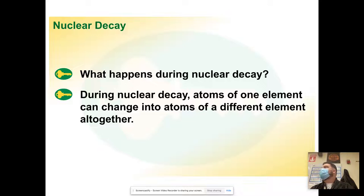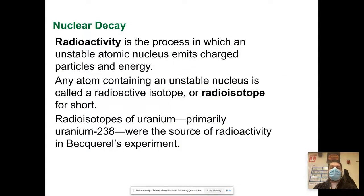During nuclear decay, atoms of one element can change into atoms of a different element. Radioactivity is a process in which an unstable atomic nucleus emits charged particles and energy. Any atom containing an unstable nucleus is called a radioactive isotope or radioisotope for short. Radioisotopes of uranium, primarily uranium-238, were the source of radioactivity in this experiment.